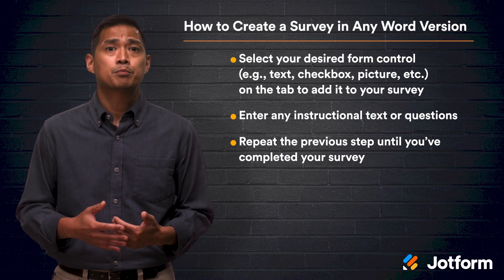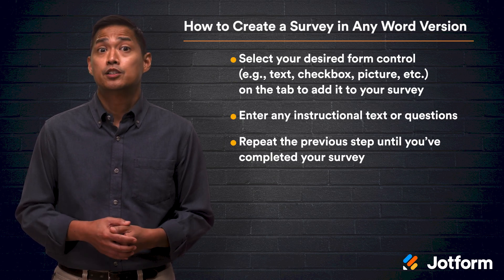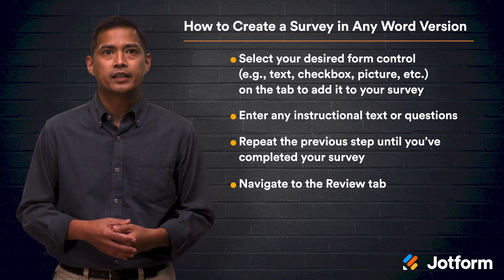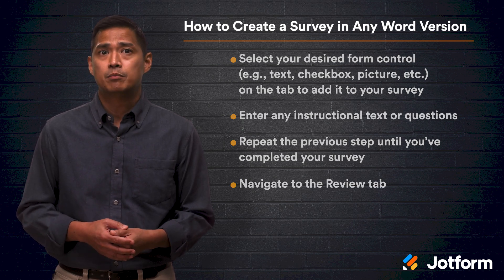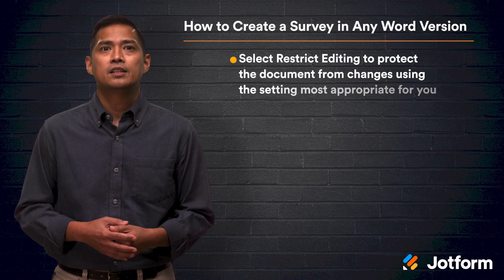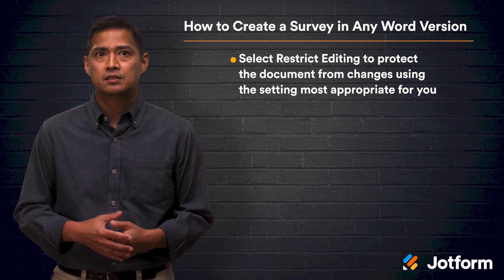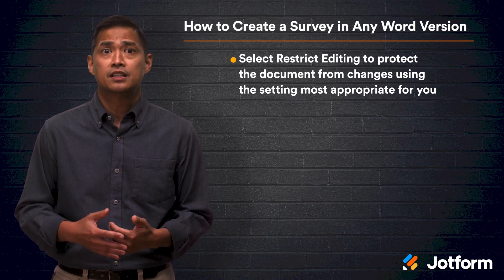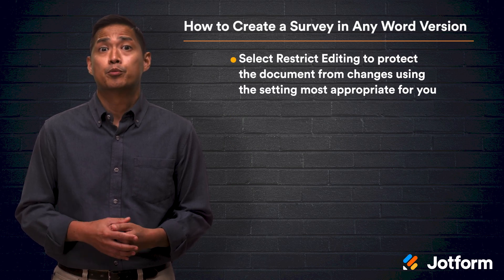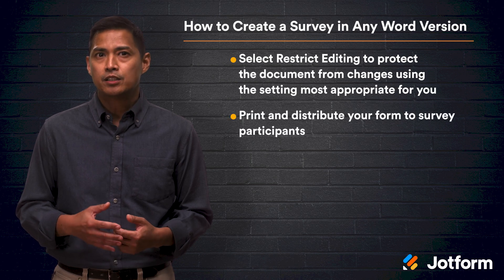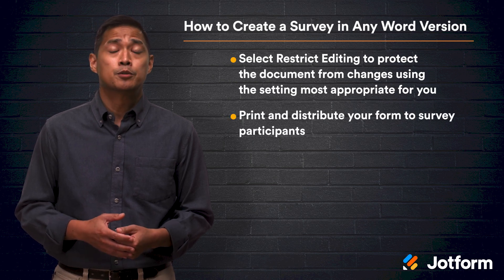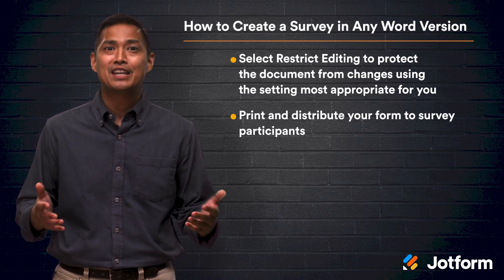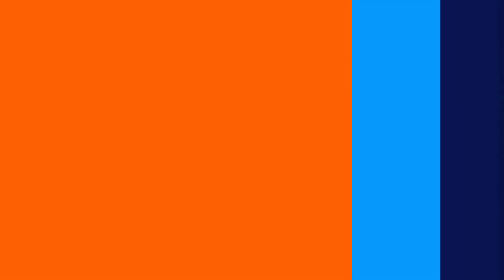Just repeat the previous step until you've completed your survey. Next, find and click on the Review tab. Select Restrict Editing to protect the document from changes using the setting most appropriate for you. Then you're ready to print and distribute your form. Simple and effortless.